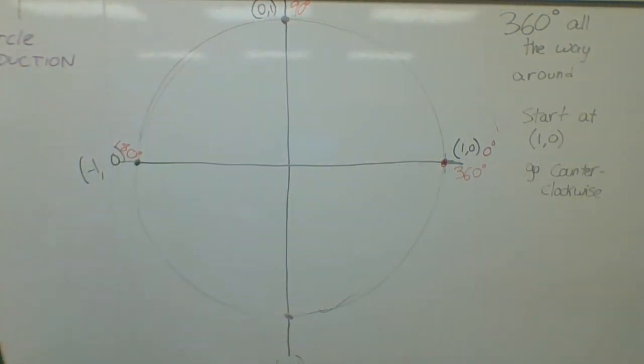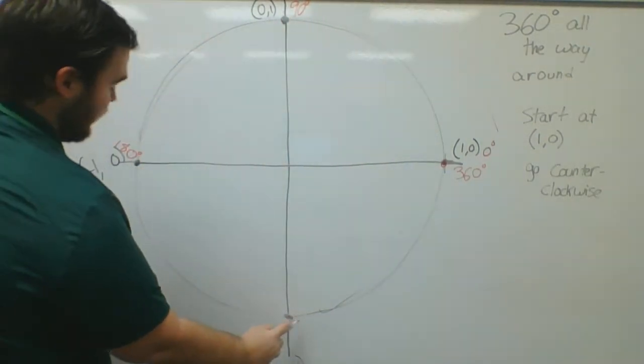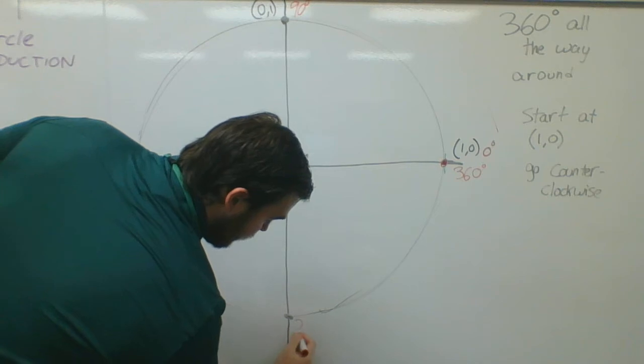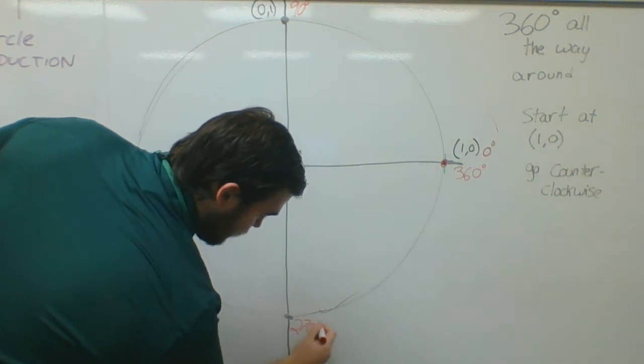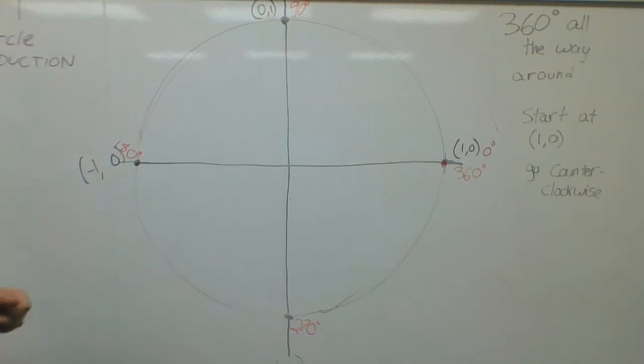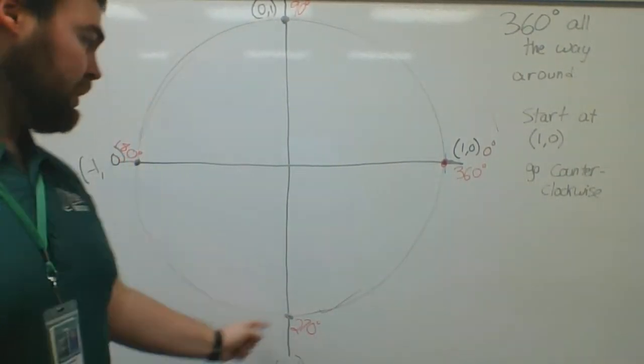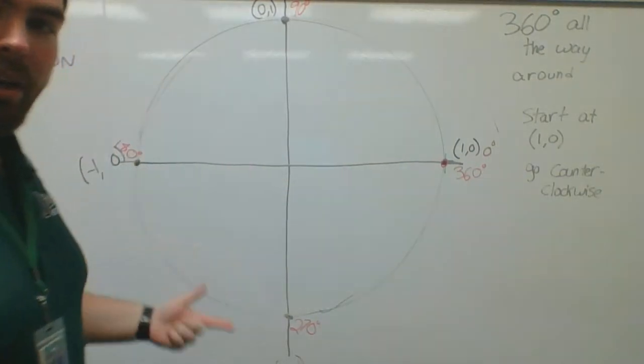I know it goes 0 plus 90 plus 90 plus 90. So this would be 270. So this is our 90 series: 0, 90, 180, 270, 360. Just add 90 all the way around.